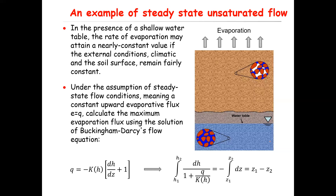There is a lot of research on this evaporation process from soil in the presence of a water table, but we are considering a simple scenario in line with the scope of this course. Under the assumption of steady state flow—because external conditions are constant, water table is fixed, and evaporation is constant—we assume a constant upward evaporative flux equal to Q, the Darcy velocity through the unsaturated zone. The question is: calculate the maximum evaporation flux using the solution of the Buckingham-Darcy flow equation.